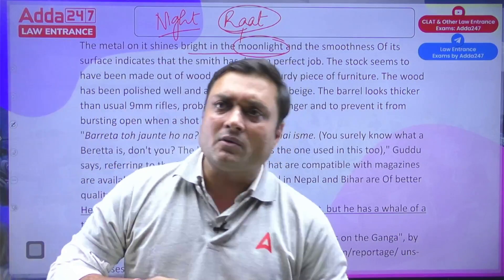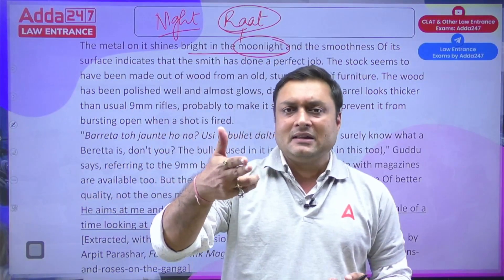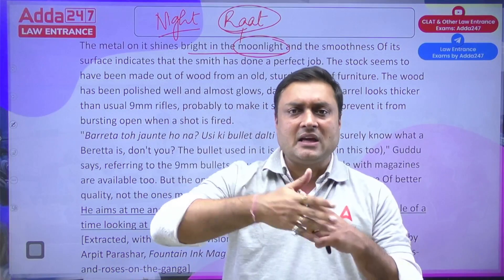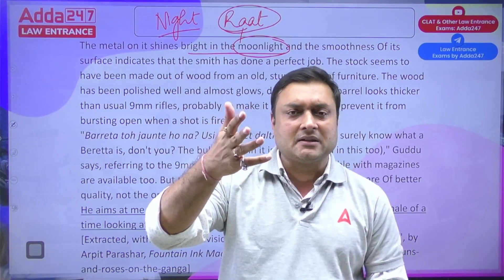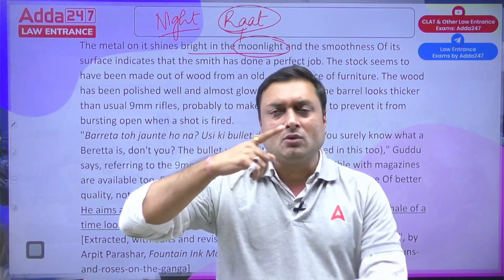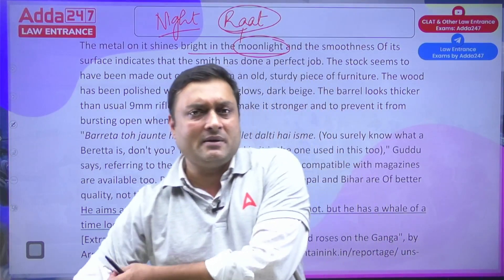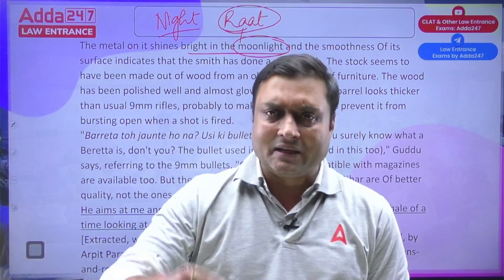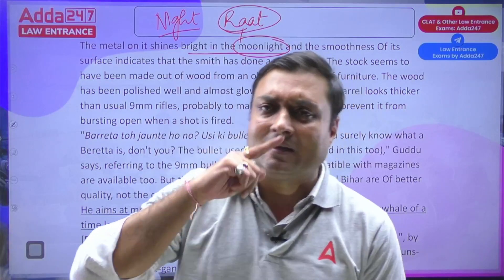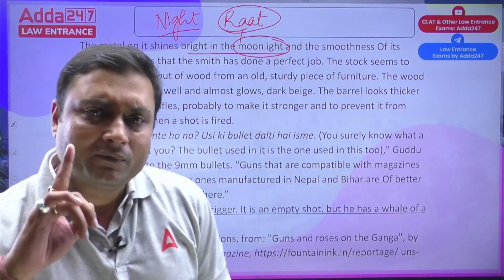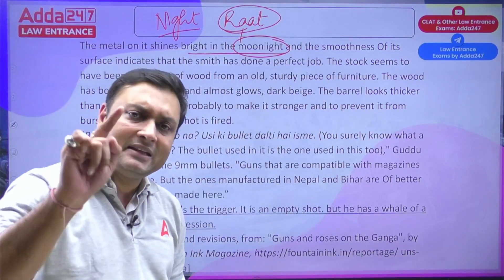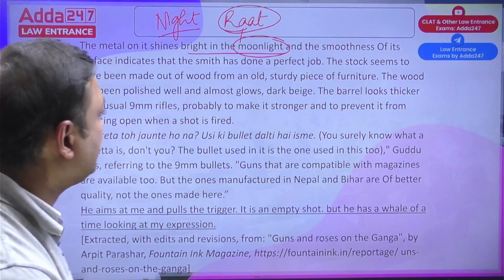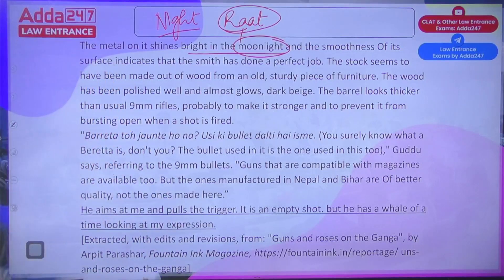The barrel looks thicker than usual 9mm rifles — probably to make it stronger and to prevent it from bursting open when a shot is fired. The instructor references Mirzapur where a desi rifle appeared. Guns compatible with magazines are available too, but the ones manufactured in Nepal and Bihar are of better quality, not the ones made locally.